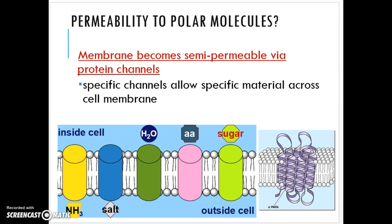The things that help larger or polar molecules get through the cell membrane are protein channels. If we want to use diffusion to move things across the cell membrane, we need a passageway through the hydrophobic composition of the lipid bilayer. As you know from your cell models, there are little tunnels made out of protein called protein channels that allow specific materials to cross through.